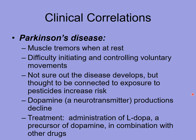A clinical correlation is Parkinson's disease. As it progresses, muscle tremors become more and more obvious, with visible shaking at rest. The individual has difficulty controlling voluntary movements. The exact cause is not known, though some correlations have been made to exposure to pesticides increasing risk. Dopamine — a neurotransmitter — production tends to decline in individuals with Parkinson's disease, and part of the treatment is to administer a precursor to dopamine to try to compensate for that.